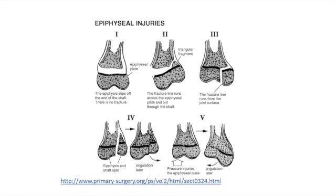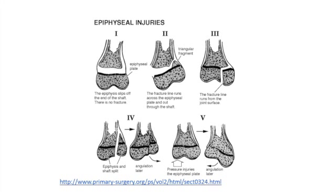Type 3 injuries are rare and usually occur at the ends of the tibia. Accurate realignment is essential to restore a smooth joint surface and align the epiphyseal plates, and an open operation may be necessary in these types of fractures.